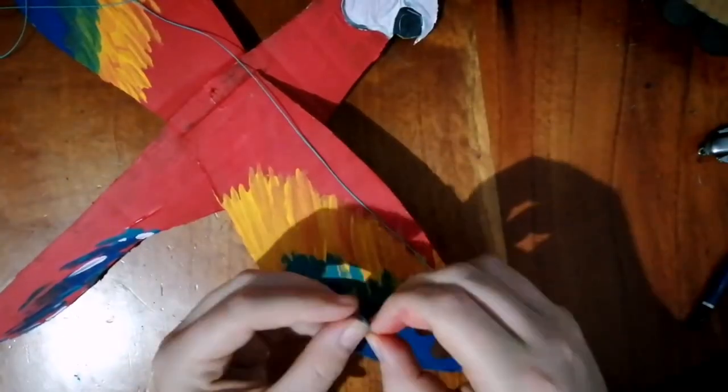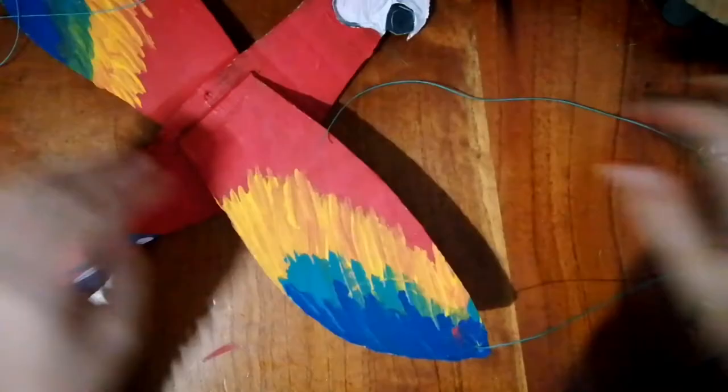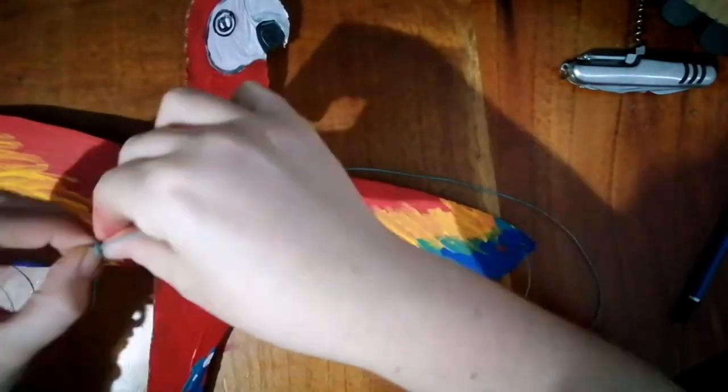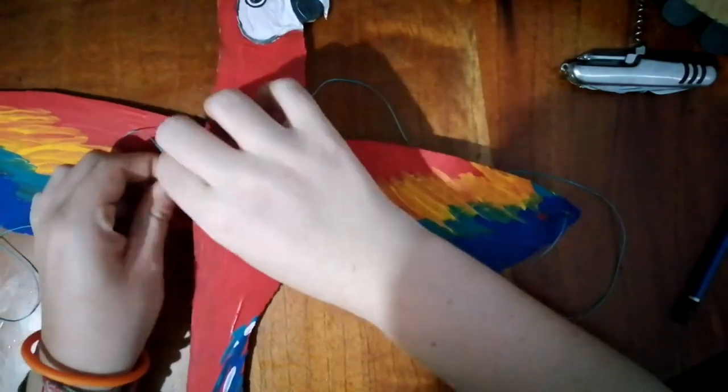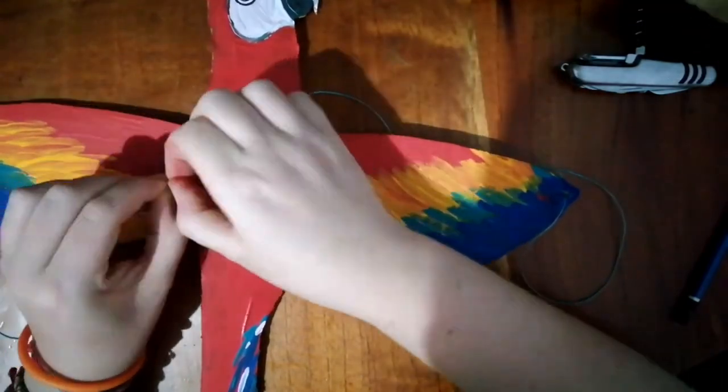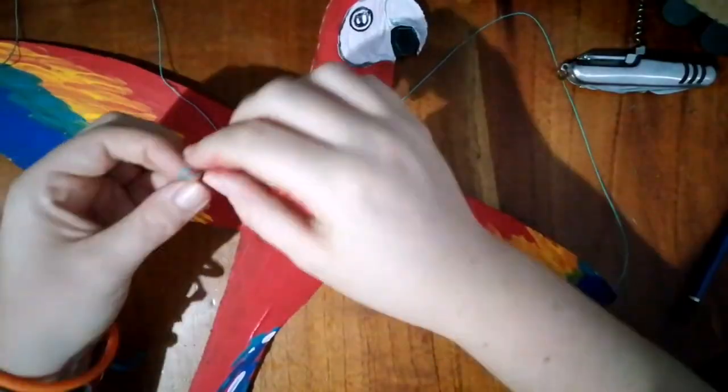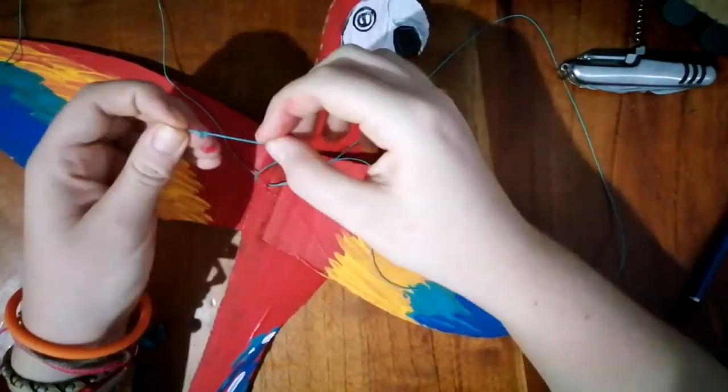Then put both of those through the centre hole. That is what's going to hold your wings up and help your macaw fly. To pull the second string through, I tied the first string onto it and then pulled that through so that both are through the same hole.